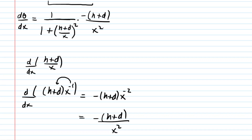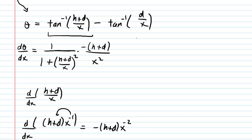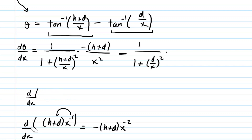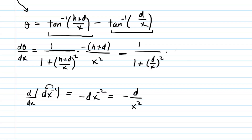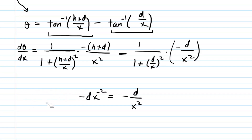We apply the same principles to the next inverse tangent term. That gives us minus 1 over (1 plus (D/X)²), multiplied by the derivative of D/X. Rewriting D/X as D·X⁻¹ and applying the power rule gives −D·X⁻², or −D/X². So our full derivative expression is now written out, and it is wise to simplify it.